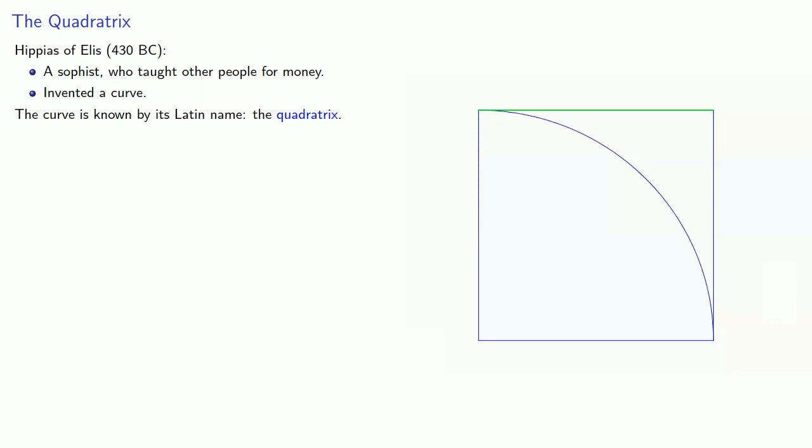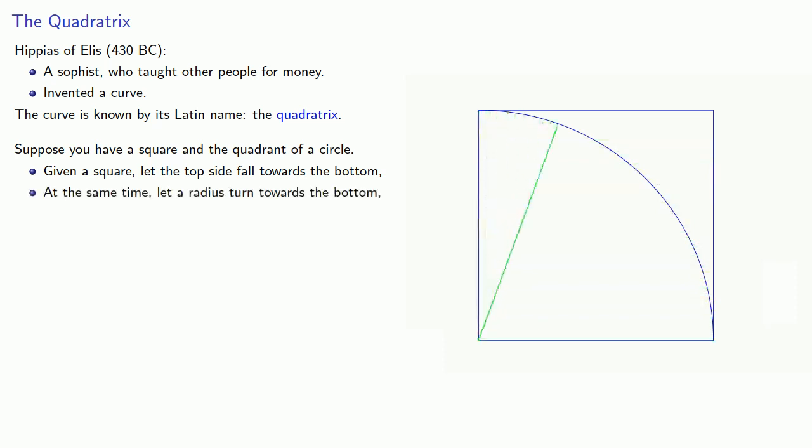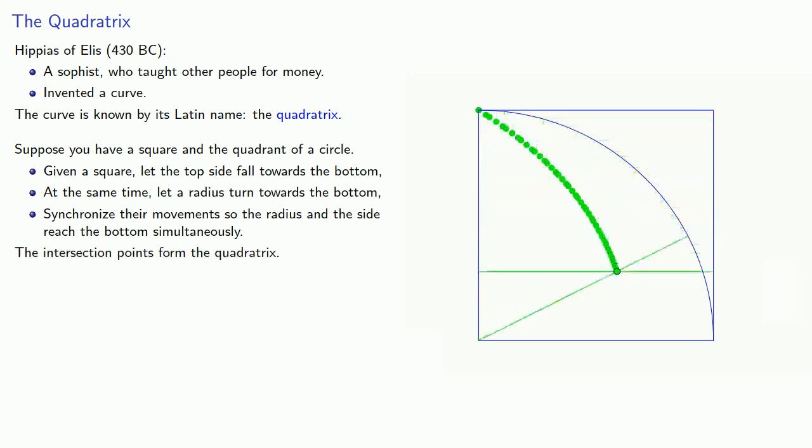But evidently he described the quadratrix as follows. Suppose you have a square and a quadrant of a circle. Let the top side fall towards the bottom, and at the same time, let a radius of the circle also turn towards the bottom. And here's the trick, let's synchronize their movements so the radius and the side reach the bottom simultaneously. The intersection of the turning radius and the falling side form the quadratrix.